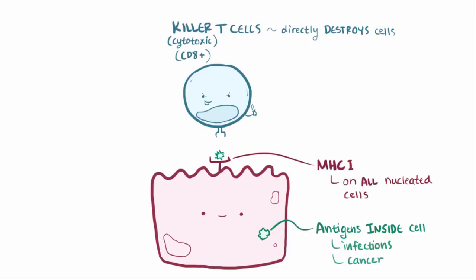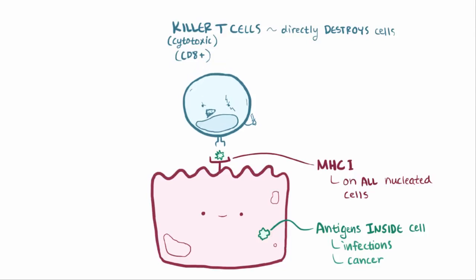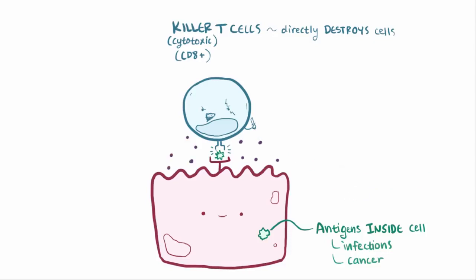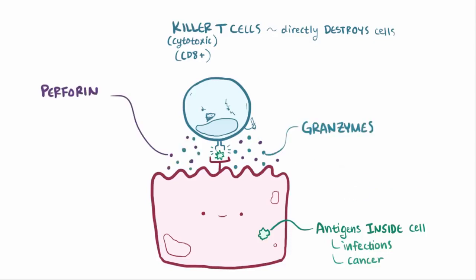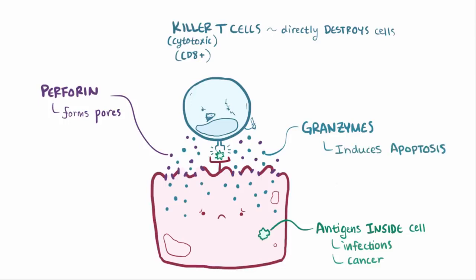If this were to happen, an effector cytotoxic T cell specific to that antigen would use its T cell receptor to bind to the MHC class I molecule, which would cause it to release its payload of perforin and granzymes. Perforin would perforate the target cell by forming pores, and these pores would allow the granzymes to enter the cell. Once inside, the granzymes induce apoptosis, or programmed cell death.